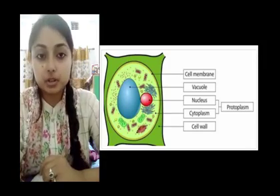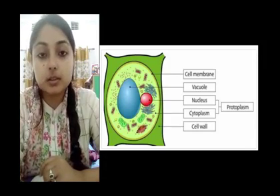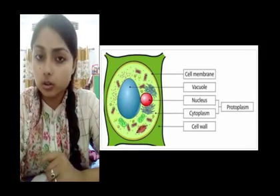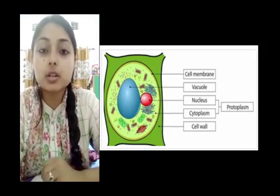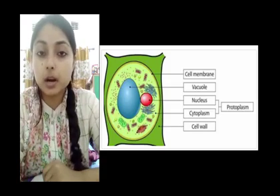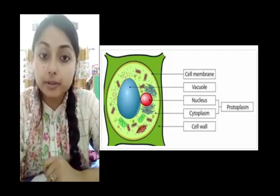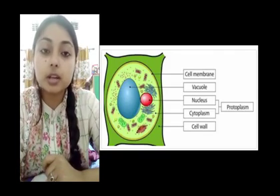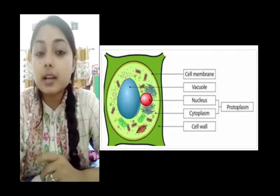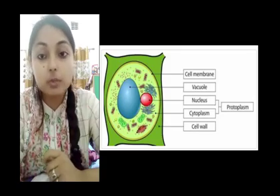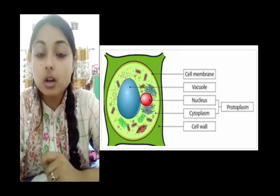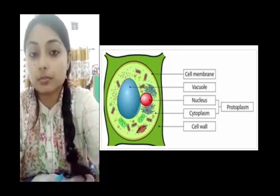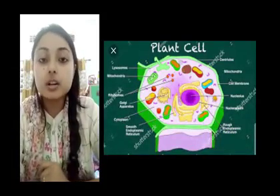The chemical composition of protoplasm is very complex and varies a little from one cell to another. The common elements included in the composition of protoplasm are carbon, hydrogen, oxygen, nitrogen, sulfur, iodine, and phosphorus. These elements are in the form of specific compounds such as water, protein, carbohydrates, fats, and mineral salts.